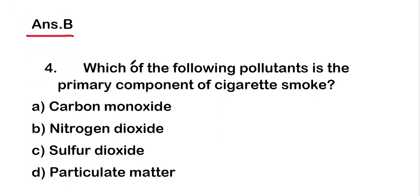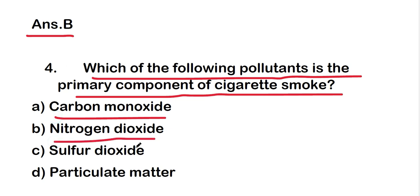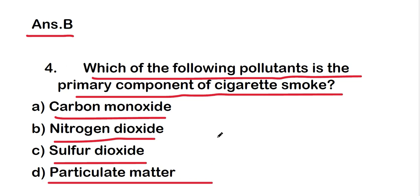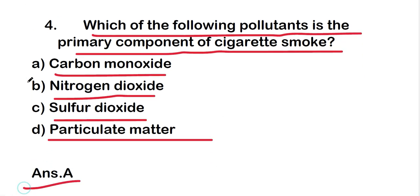Next question: which of the following pollutants is the primary component of cigarette smoke? The options are carbon monoxide, nitrogen dioxide, sulfur dioxide, or particulate matter. The right answer is option A, that is carbon monoxide. Carbon monoxide is the primary component of cigarette smoke.